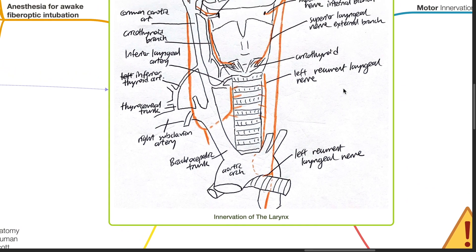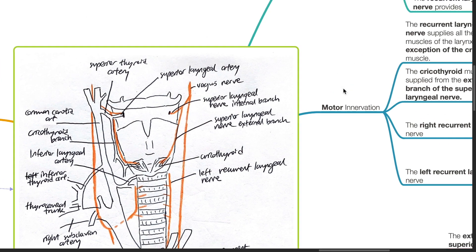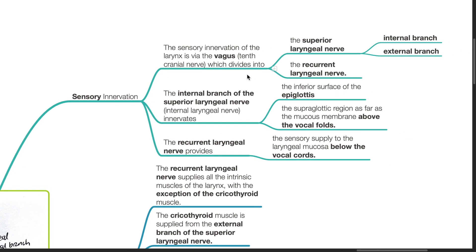Next, we move on to the innervation of the larynx. The sensory innervation of the larynx is via the vagus nerve, which divides into the superior laryngeal nerve and the recurrent laryngeal nerve. The superior laryngeal nerve divides further into the internal and external branches. The internal branch of the superior laryngeal nerve innervates the inferior surface of the epiglottis and the supraglottic region as far as the mucous membrane above the vocal cords. The recurrent laryngeal nerve provides sensory supply to the laryngeal mucosa below the vocal cords.